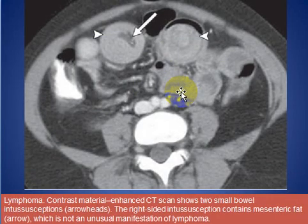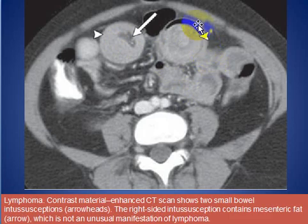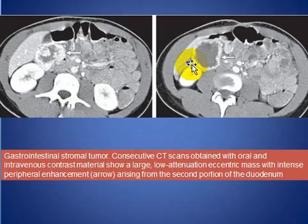Here is a CT scan after oral and IV contrast in a patient with lymphoma with intussusception. The right-sided intussusception contains mesenteric fat, as we see here. This is also the intussusception in a patient with lymphoma.